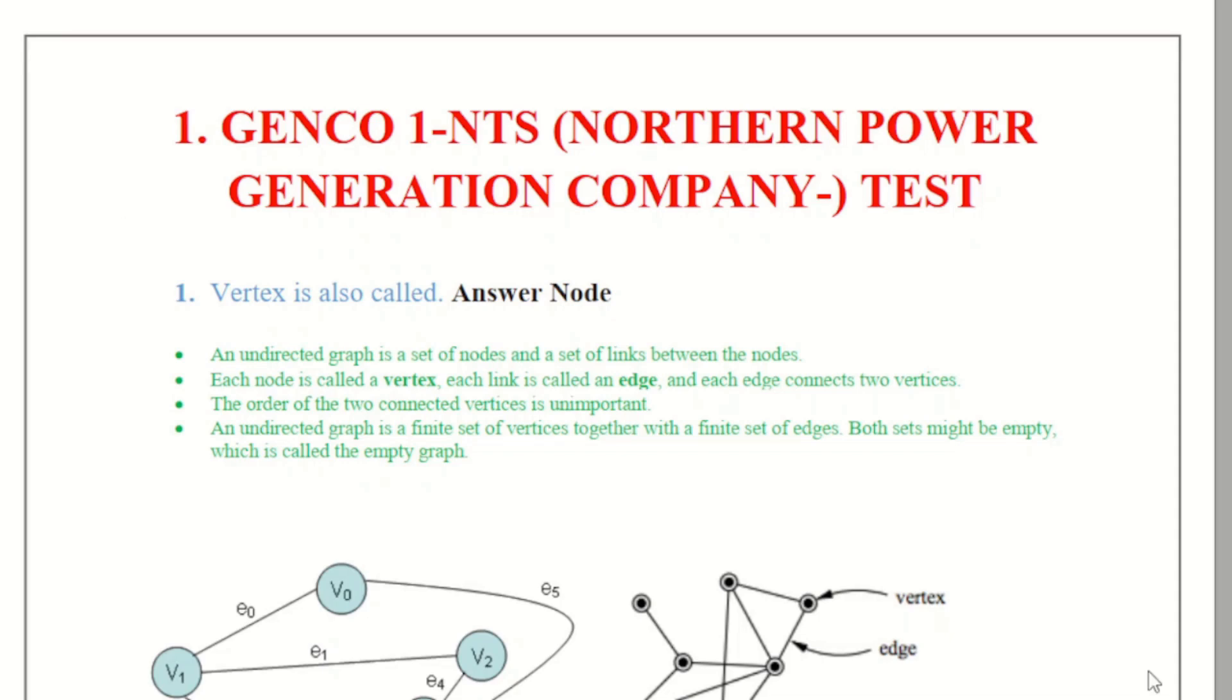The first MCQ was the vertex is also called the node. So you can see here are the V0, V1, V3, V2 and there are the vertexes and that are also said to be the nodes. So link between these vertexes are said to be the edges. You can observe by these diagrams the edges and the nodes are said to be the vertexes.